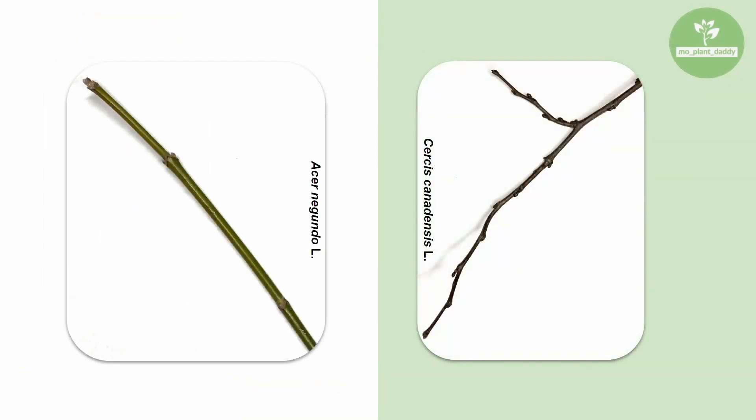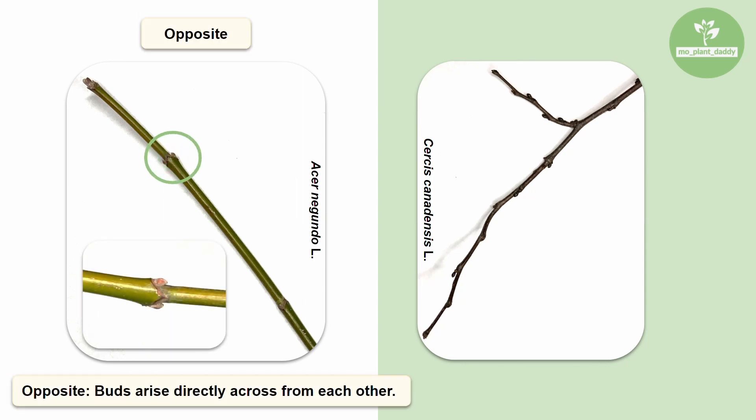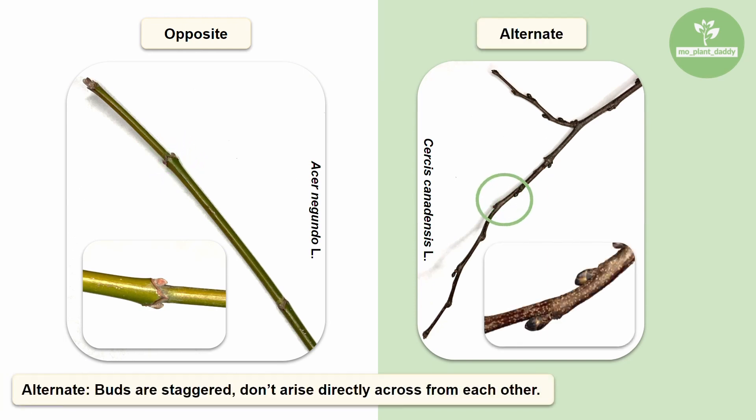Buds can be arranged on the stem of a twig in two common fashions. The first arrangement is opposite. An example of an opposite arrangement is the buds on a box elder twig — the buds on this twig are directly across from each other. The second common arrangement is called alternate arrangement. An example of an alternate arrangement would be a red bud twig, which has staggered buds that are not directly across from each other.